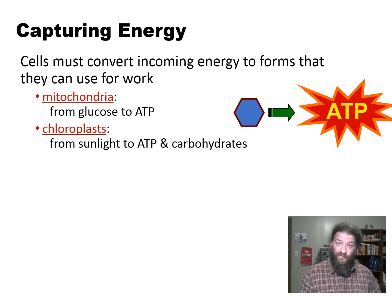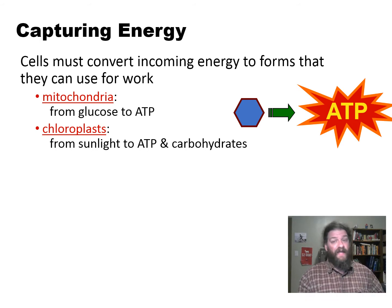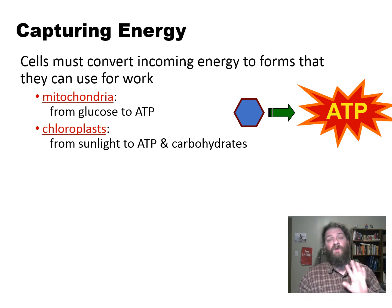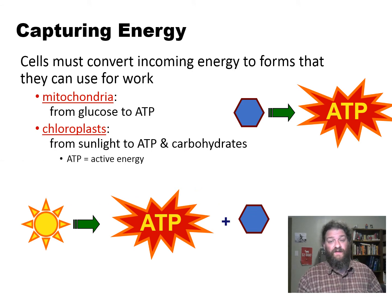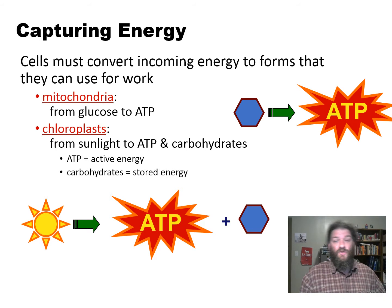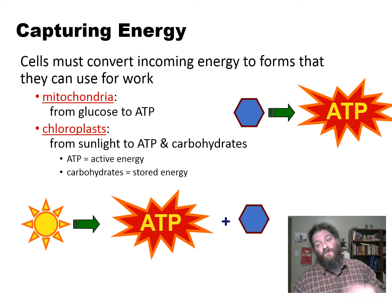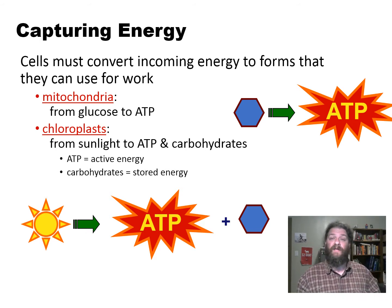The chloroplasts also do this, except they're going to be converting sunlight into ATP. We're going to spend more time talking about exactly how that takes place. But certainly that conversion is happening — they take sunlight and convert it into ATP, which they then use to make carbohydrates. That's the way they store their energy for later on.